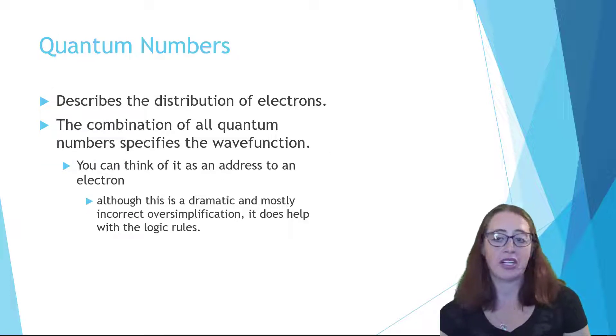Quantum numbers describe the distribution of electrons. We've already talked about the energy level n, which is our first quantum number, and have briefly mentioned the quantum number l in terms of describing the type of subshell and m sub l as the type of orbital. Now we'll actually go a bit deeper into what those mean and what they're allowed to be, as well as introducing new ones.